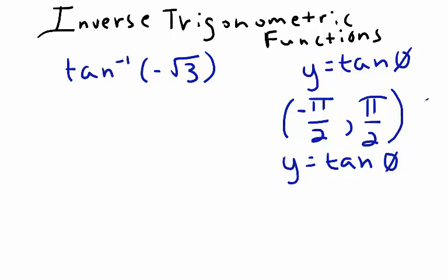To find the exact value of tan inverse, we need to look for some angle theta, where theta is between negative pi over 2 and pi over 2, such that its tangent equals negative square root of 3.